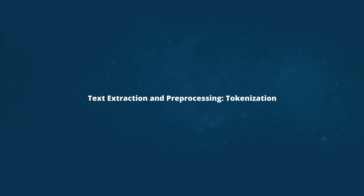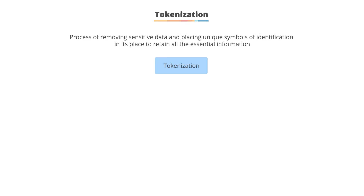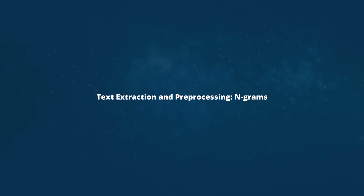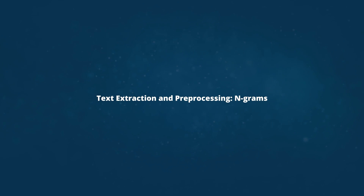Let's understand text extraction and pre-processing. Tokenization is the process of breaking running streams of text into words and sentences. It works by segregating words using punctuation and spaces. It also refers to removing sensitive data and placing unique symbols of identification in its place to retain essential information while ensuring security.